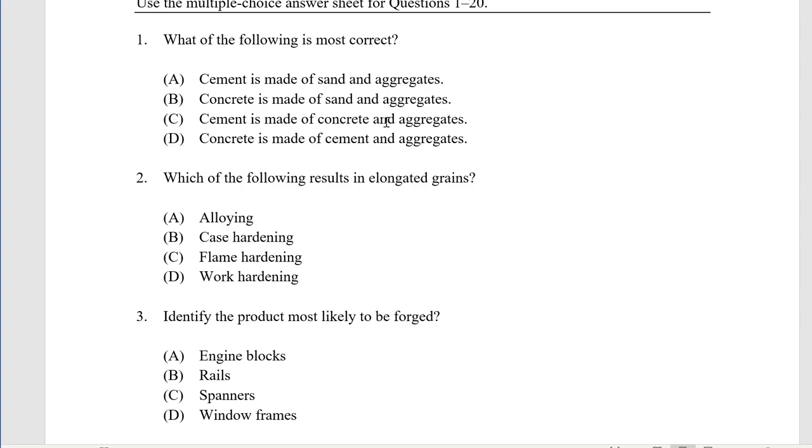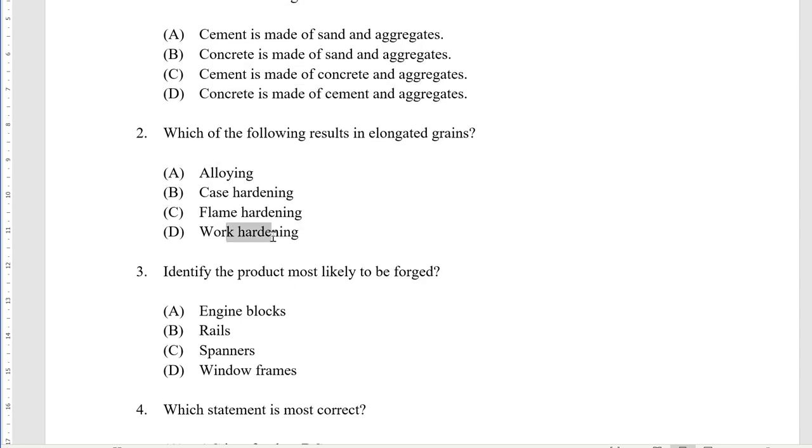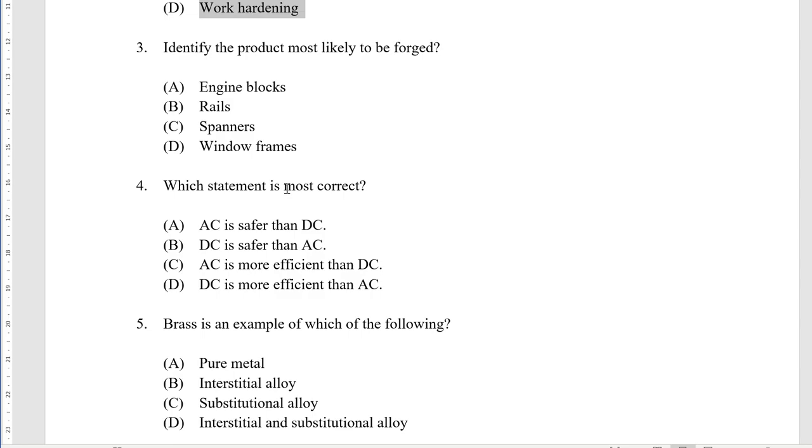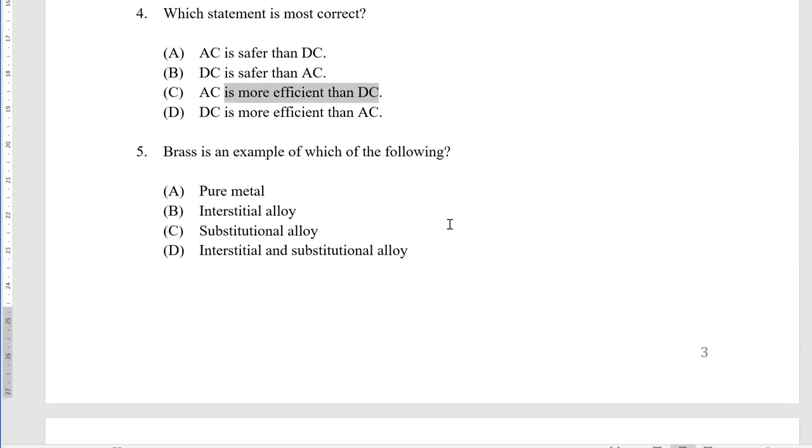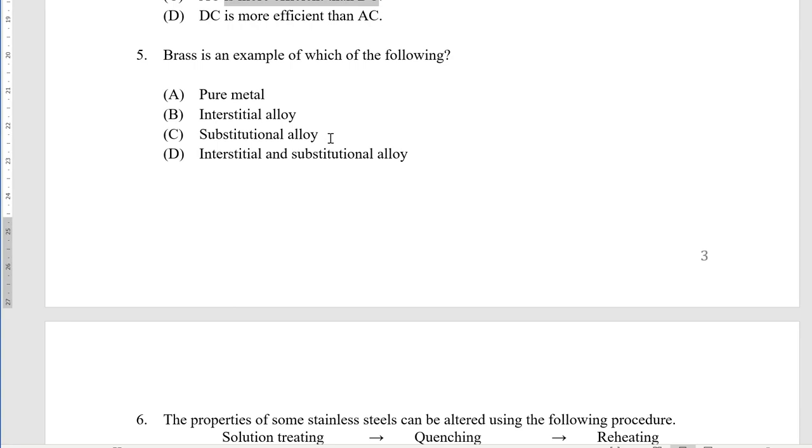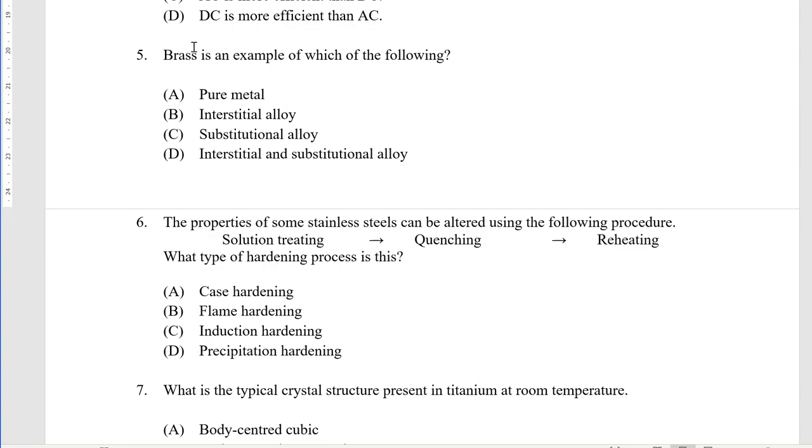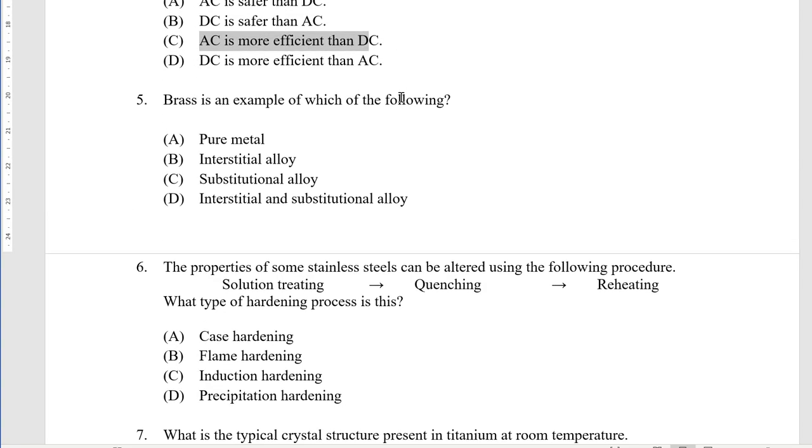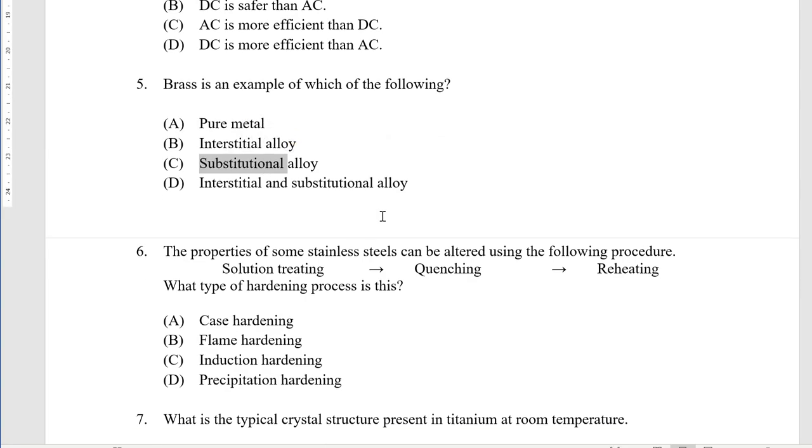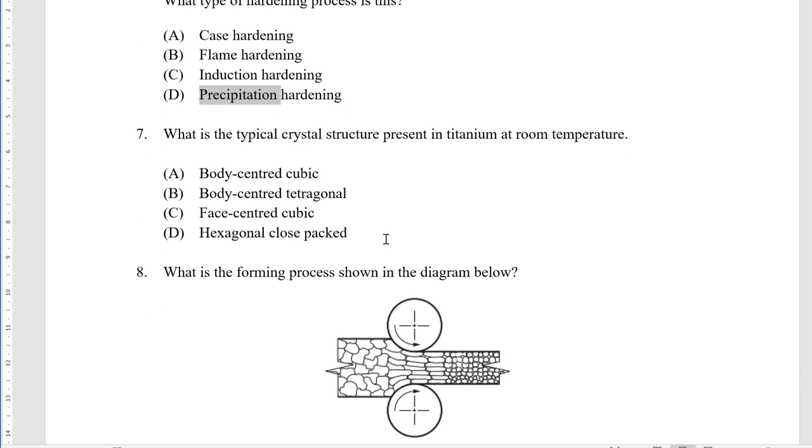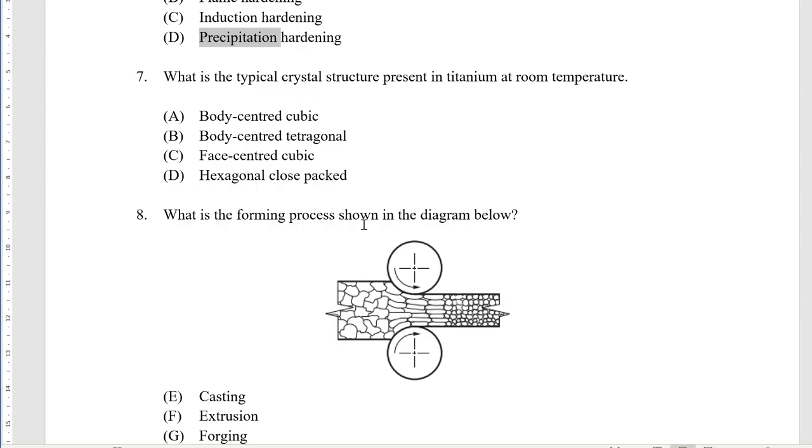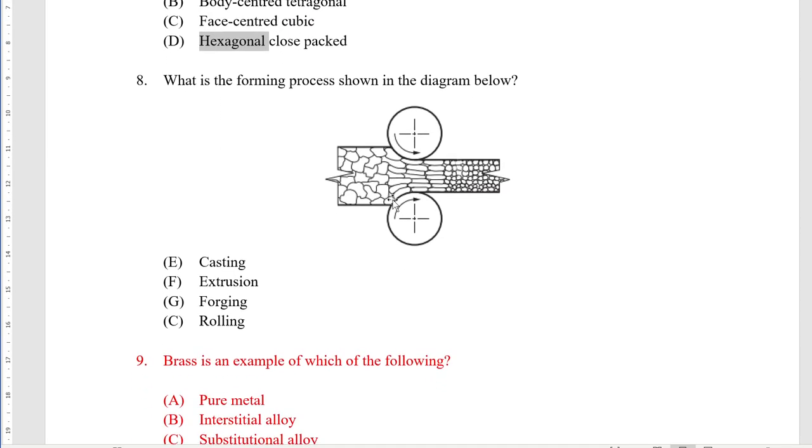Concrete is made of cement and aggregates, D. Which results in elongated grains work hardening. Identify the product most likely to be forged: spanners, which is most correct. AC is more efficient than DC. It's only most correct, it's not entirely correct but AC is the most correct answer. Brass is an example of a substitutional alloy, that's relatively tough.